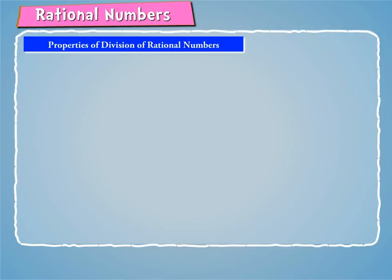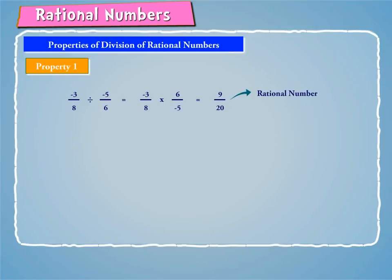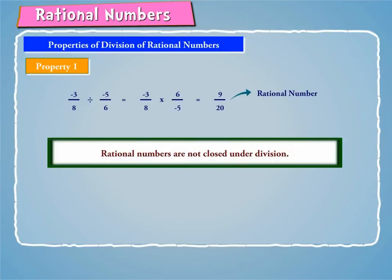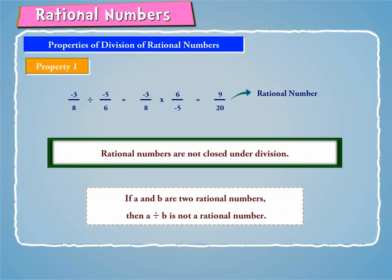Some of the properties of division of rational numbers are as follows. Property 1: Let us consider an example. Minus 3 by 8 divided by minus 5 by 6 is equal to minus 3 by 8 into 6 by minus 5, which equals 9 by 20, which is a rational number. Hence, rational numbers are not closed under division. Thus, if A and B are two rational numbers, then A divided by B is not always a rational number.